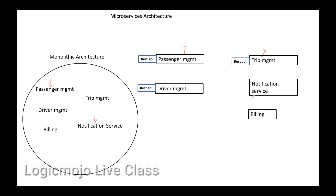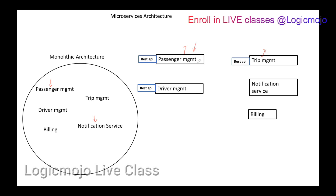Another benefit is that all features can now be scaled individually — interdependency between features is removed. For example, in Uber the number of people searching for cabs is much higher than those actually booking or making payments. So the number of processes on passenger management needs to be more than those on billing or notification service, and we can easily scale that individual module without affecting any other modules.